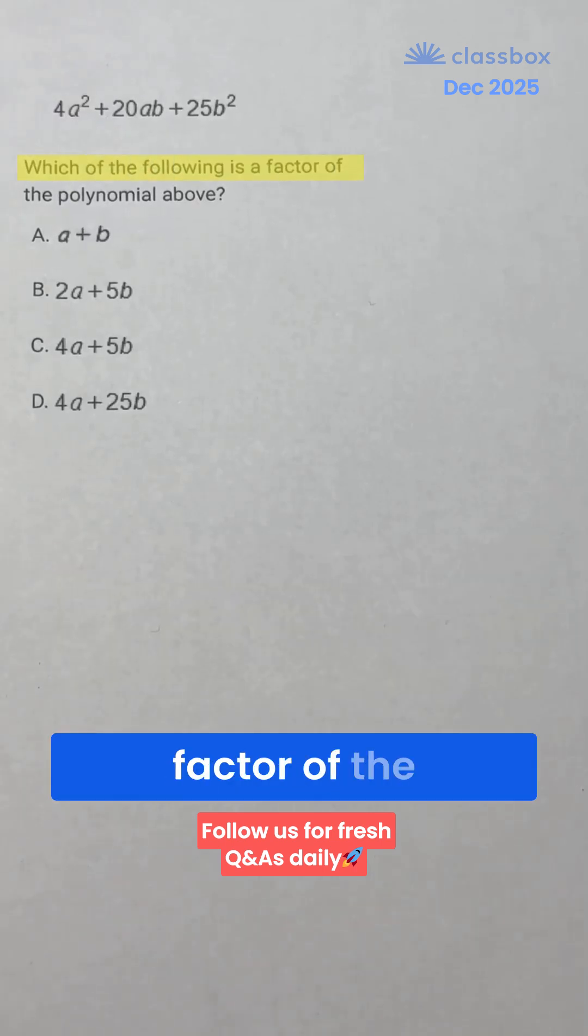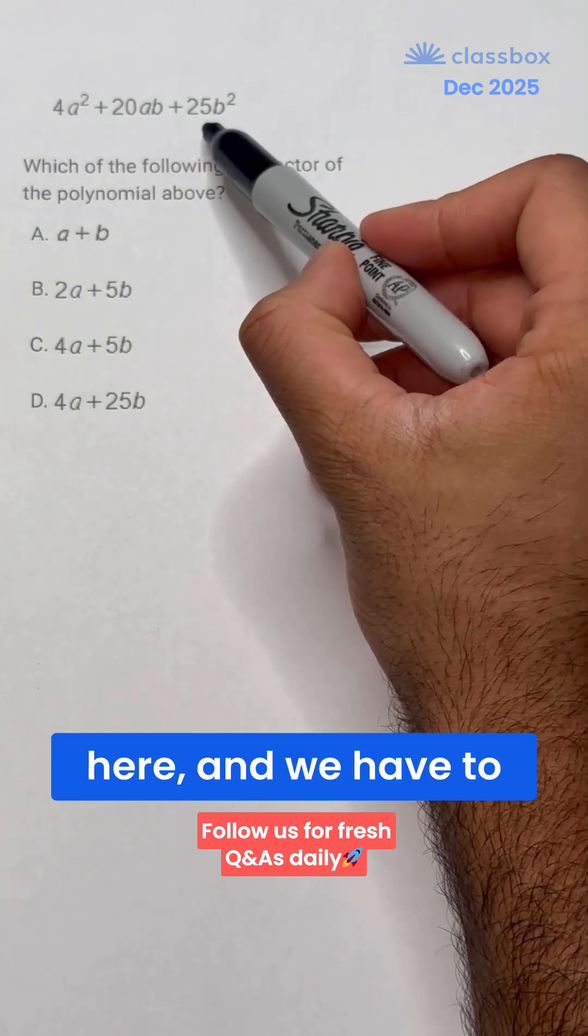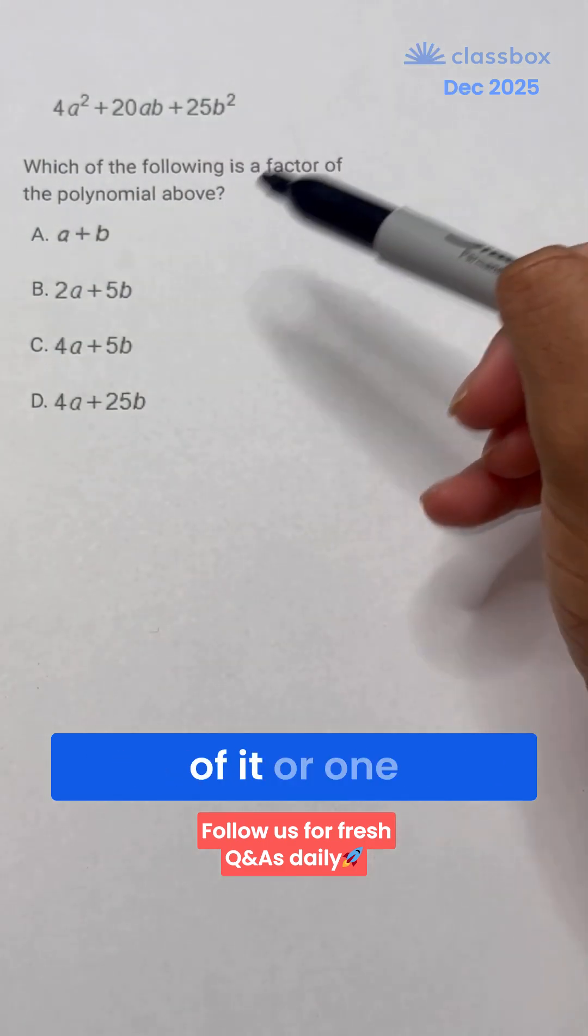Which of the following is a factor of the polynomial above? So we have a polynomial above here, and we have to try to find a factor of it, or one of its factors.